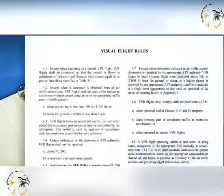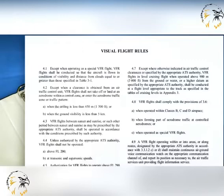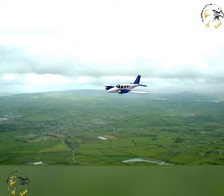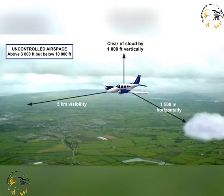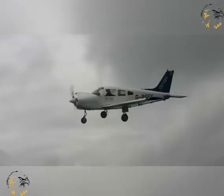This lesson deals with the subject of the visual flight rules. The visual flight rules, commonly referred to as VFR, are a set of rules which apply to aircraft flight where the pilot is able, at all times, to maintain separation from other aircraft and from terrain by reference to features outside the cockpit. VFR flight is permitted only when visibility and separation from cloud meet certain defined minima. VFR flight is not permitted when those minimum conditions are not present.